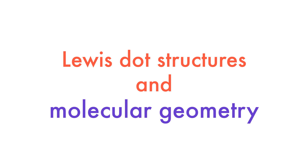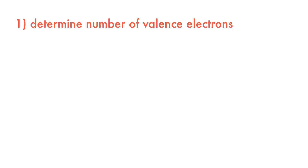It's Professor Adam. Let's look at some examples of Lewis dot structures and molecular geometry. The first step in drawing a Lewis structure is to determine the number of valence electrons, which is the sum of the group number of all of the atoms plus the charge.